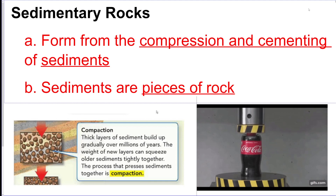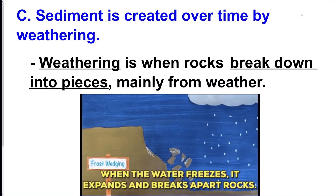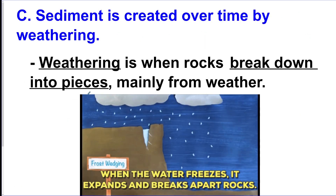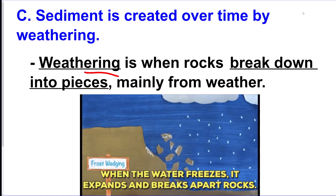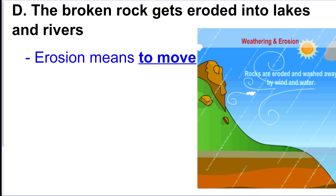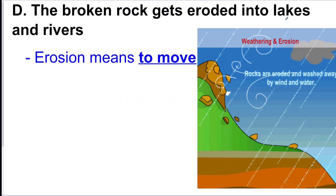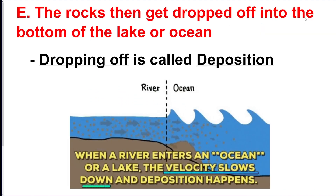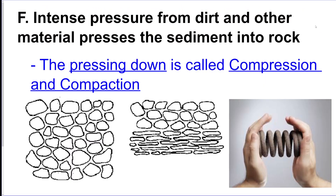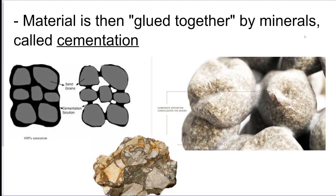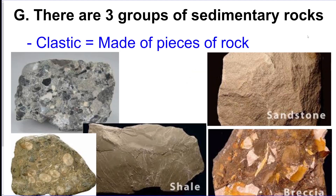The first type is sedimentary. This happens when you take pieces of rock, called sediments, and compact and compress them together and cement them so they become a sedimentary rock. The first step is called weathering — when rocks break down into pieces from weather. The broken pieces then get eroded or moved into a body of water, dropped off in a pile, and eventually the pile gets really heavy, so they're pressed down, which is called compression and compaction, and then glued together through a process called cementation by mud and water.